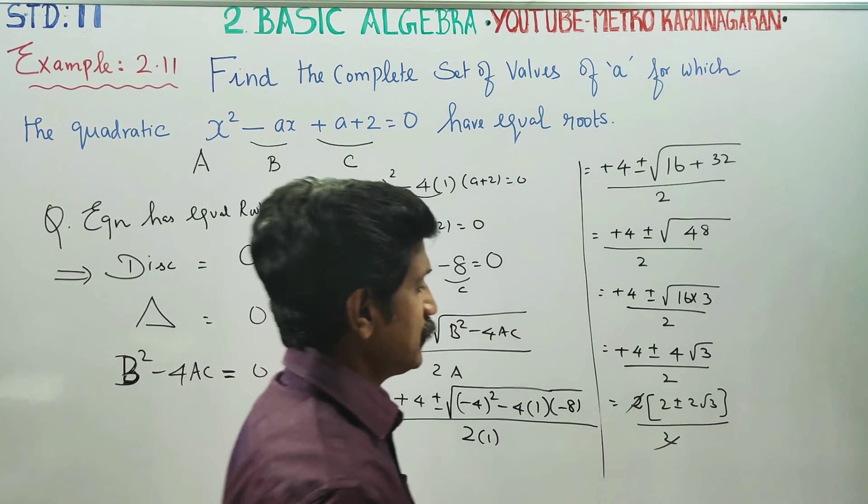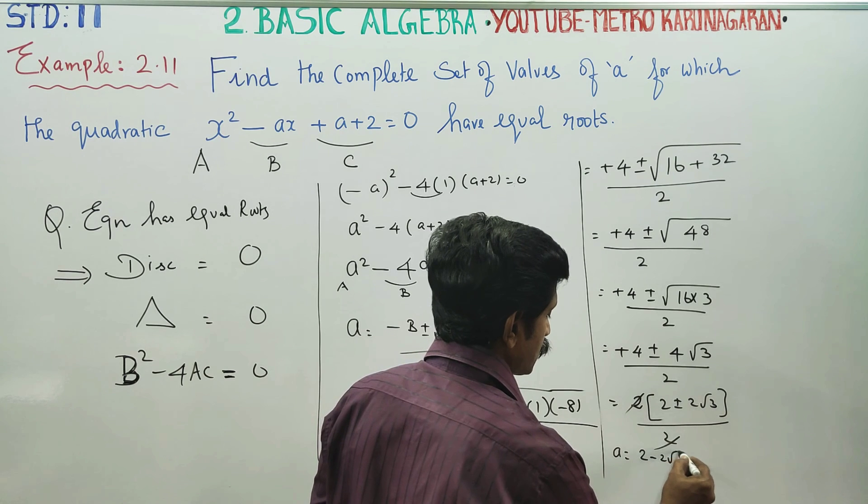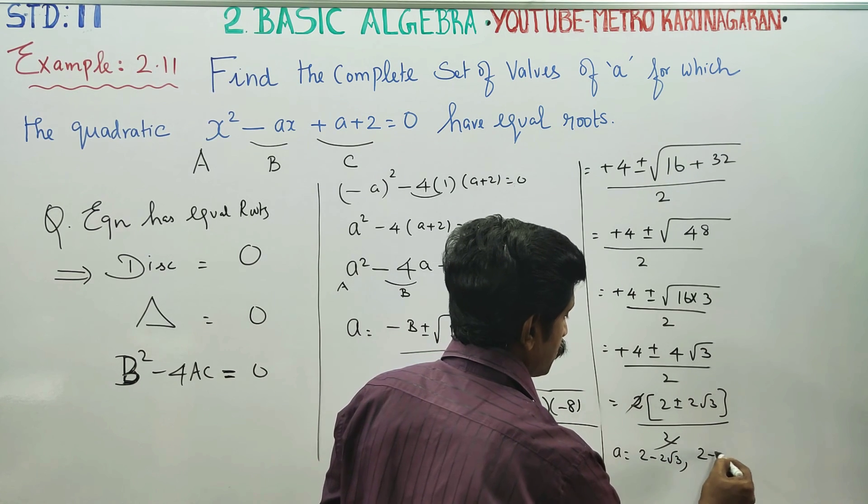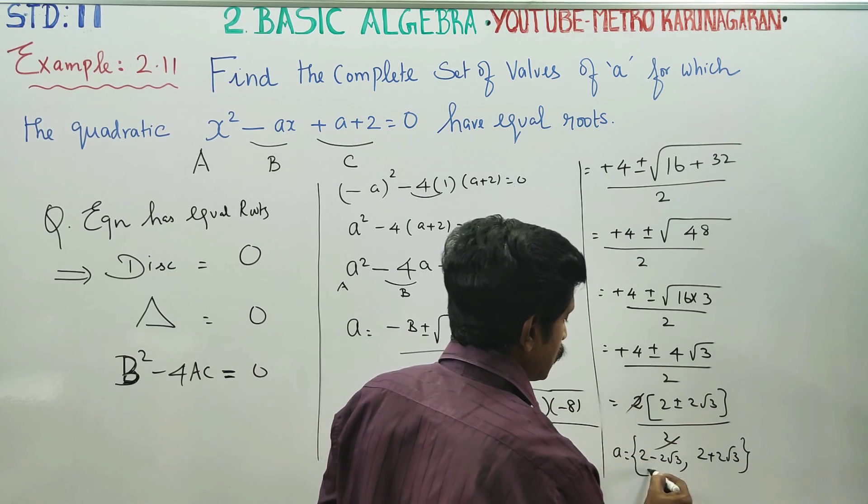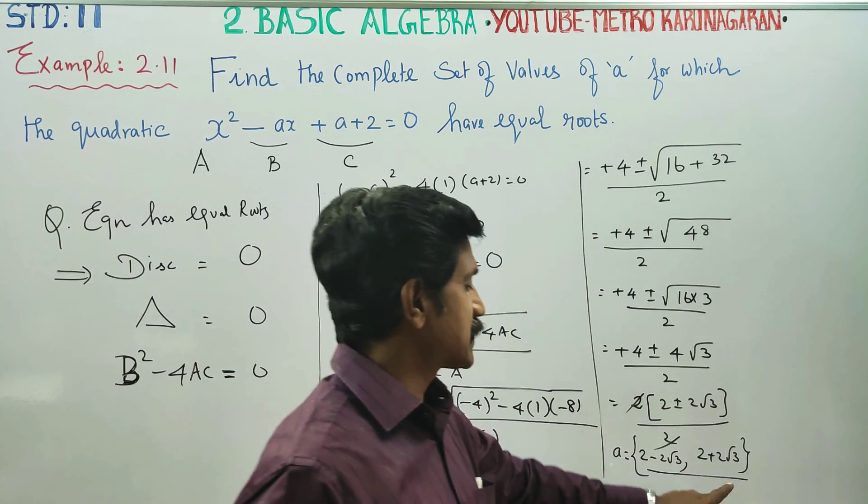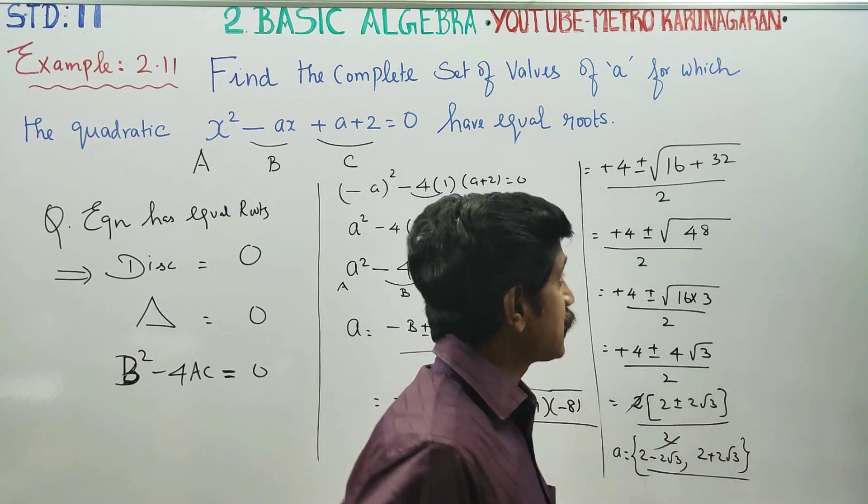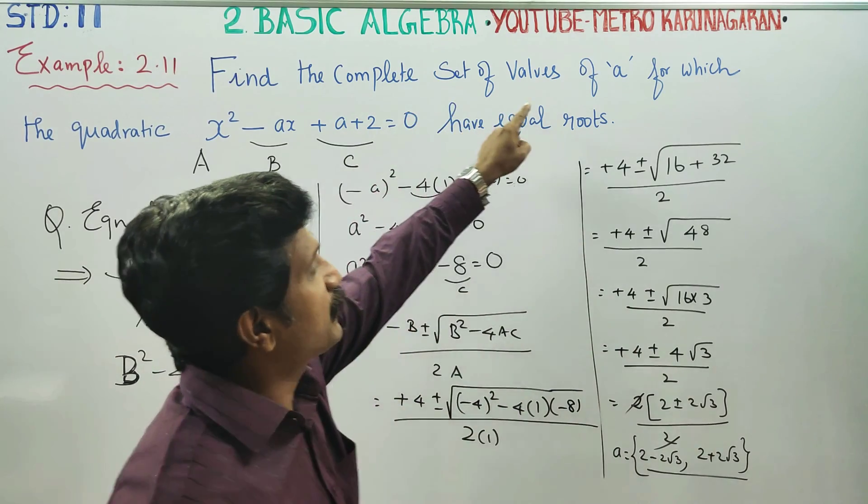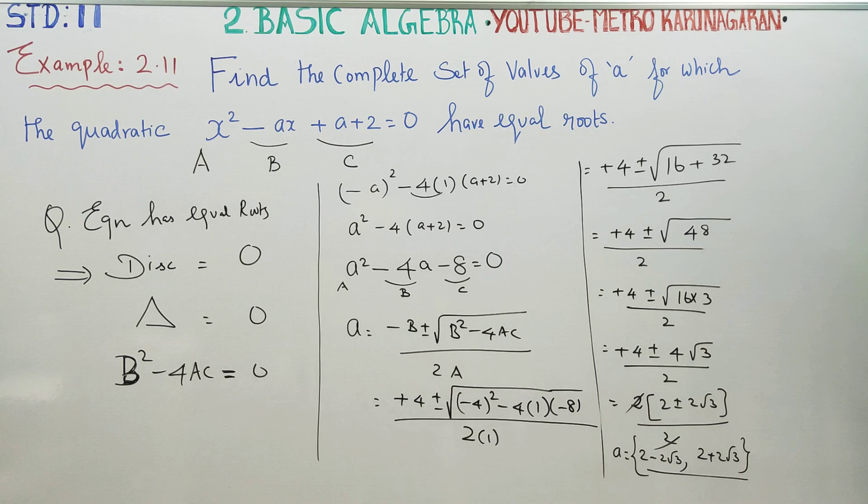2 plus or minus 2 root 3 by 2. This is the solution set for A. A is 2 plus or minus 2 root 3 by 2. This is the solution set for A, for equal roots.